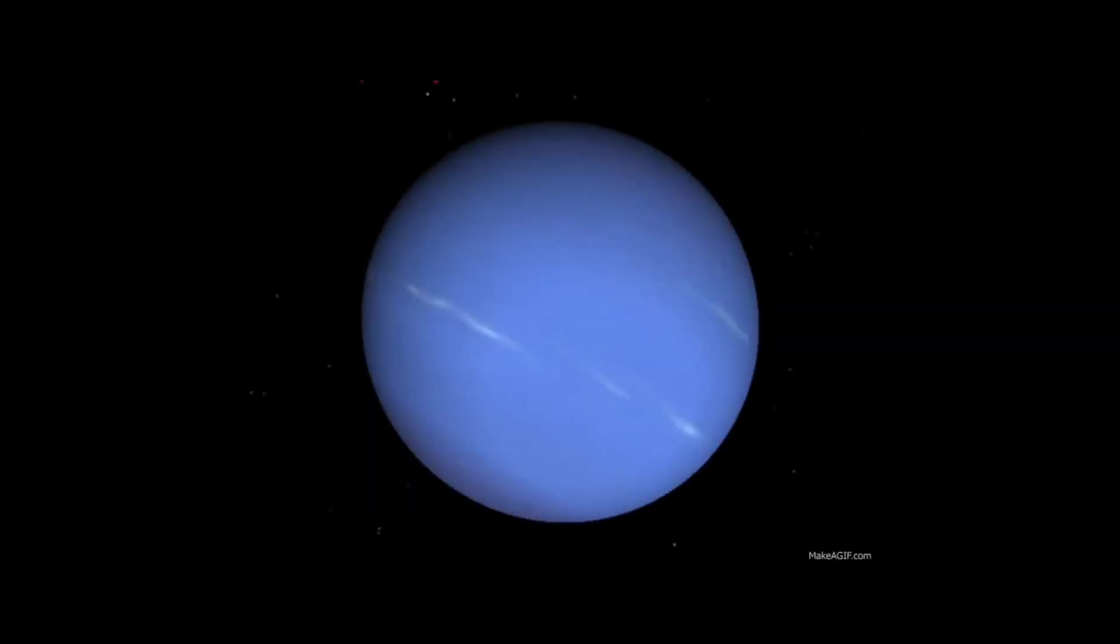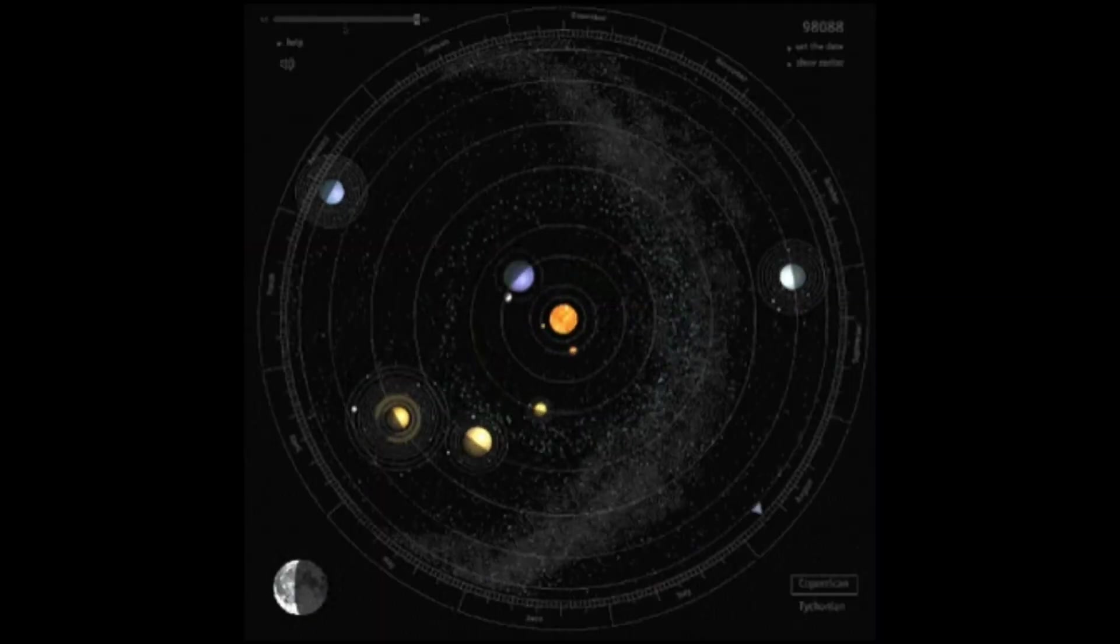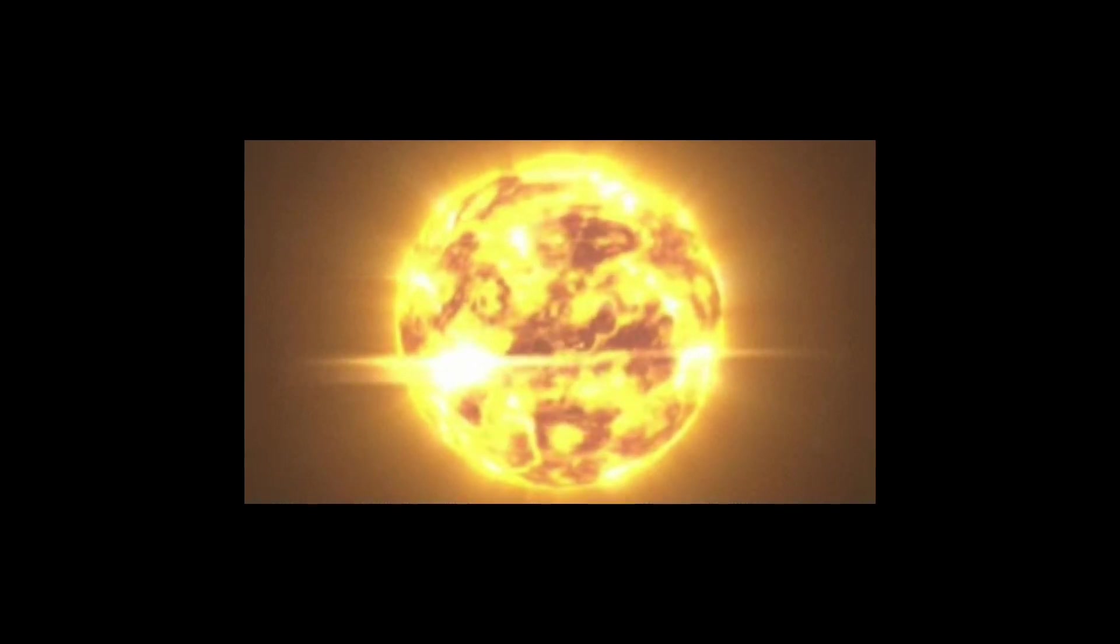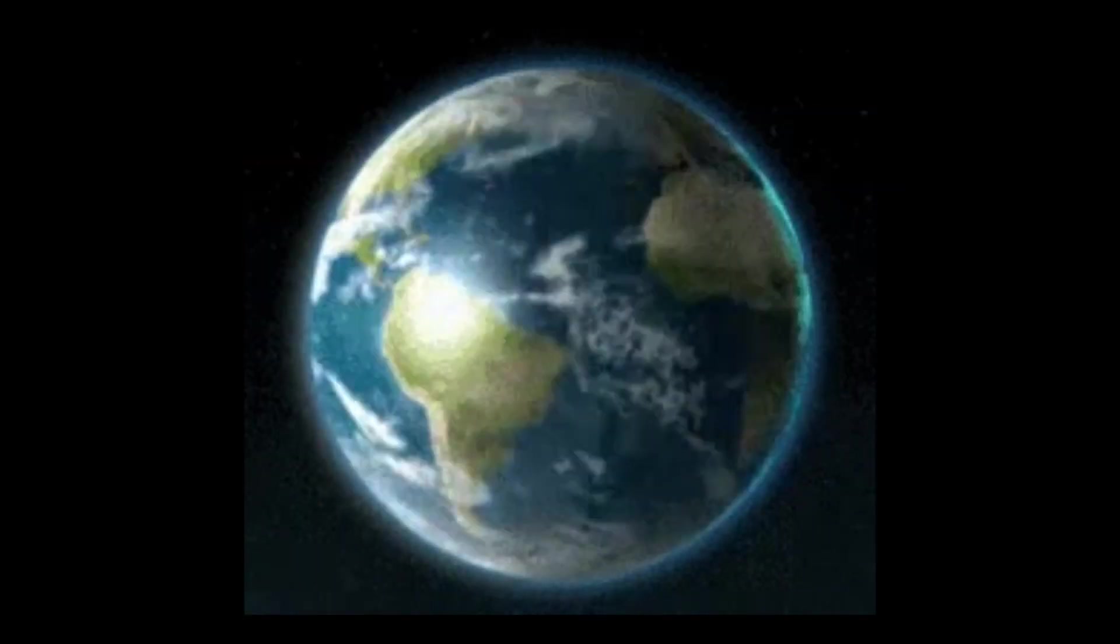Neptune completes its orbit around our star every 165 years. Its next completed orbit would be in the year 2176. Our sun contains 99.86% of all the mass in our solar system. Our star is so large that it could fit 1.3 million Earths inside of it.